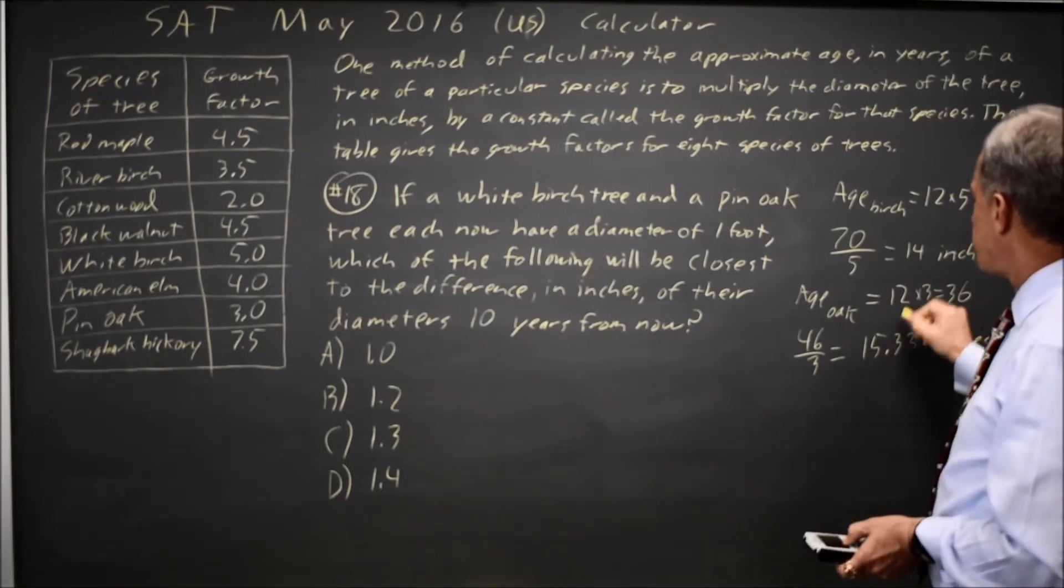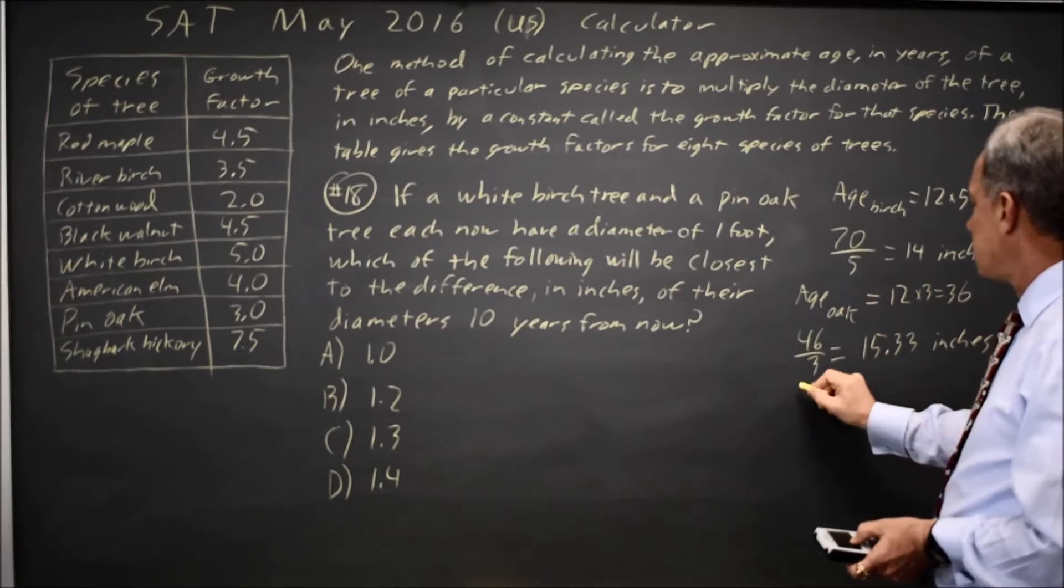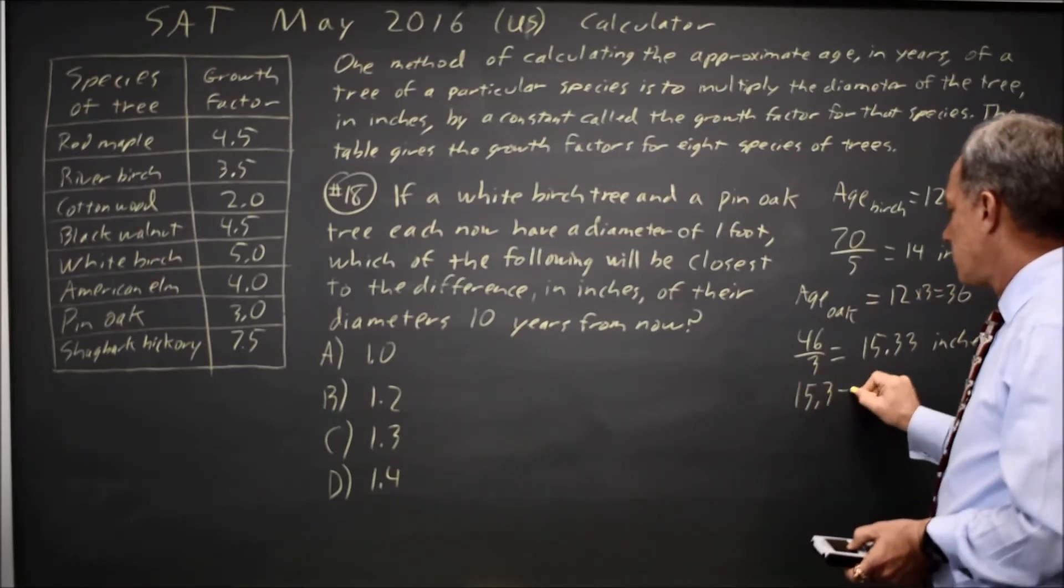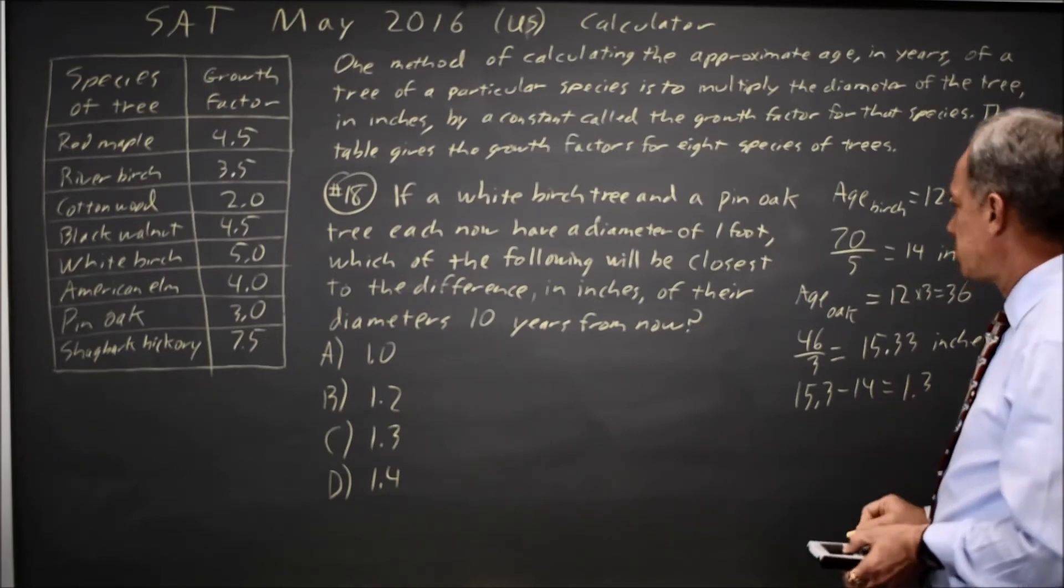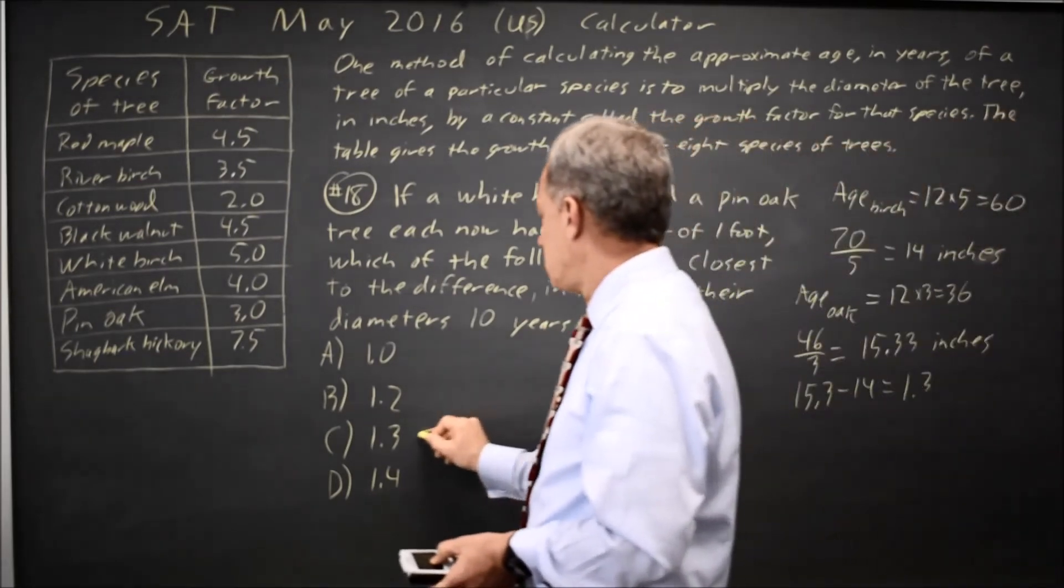And the difference, 15.33 minus 14, is to the nearest tenth 1.3 inches, which would be choice C.